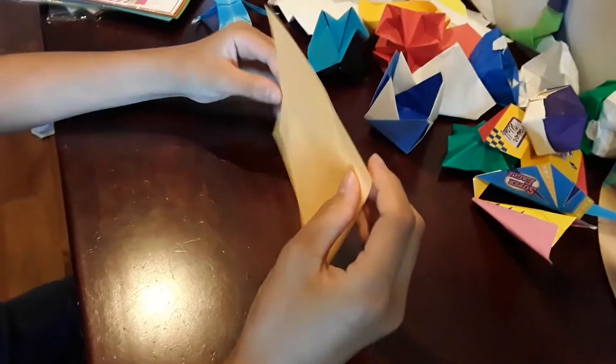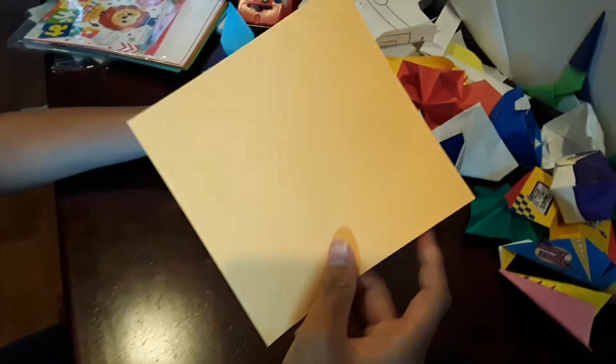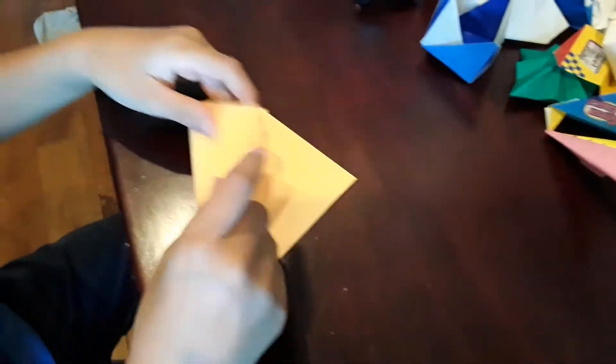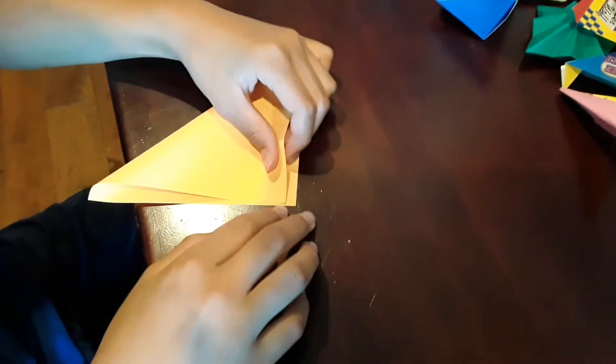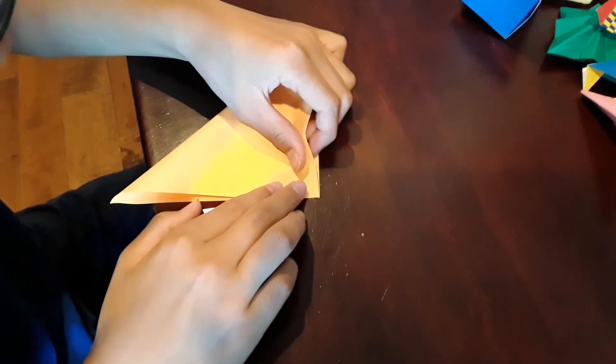All right guys, for this project you will need one square six-inch piece of origami paper. Let's get started. Start off by folding in half, just like this.